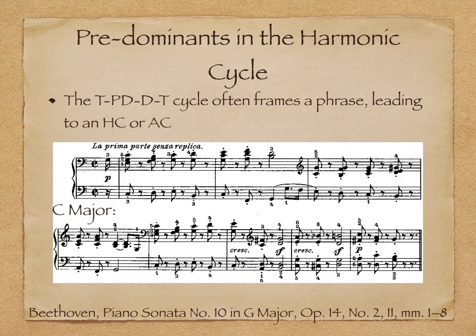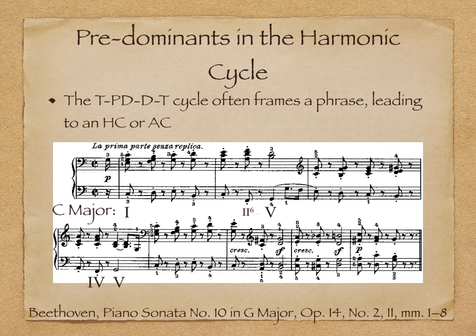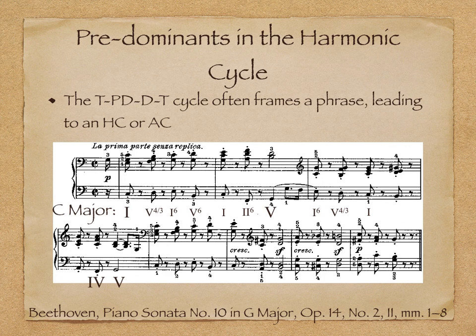The harmonic cycle often frames a phrase, leading to some type of cadence. Let's return to the Beethoven we heard earlier and look at some of the other chords in the phrase. Here are the main harmonies in the framework. Looking closer, you can see how a tonic expansion in the first few bars leads to a predominant on 4 in the fourth measure, where scale degree 4 is a neighbor tone to scale degree 5, or G in the bass. The contrary motion in the voices adds to the predominant intensification of the dominant. Here our phrase ends on a half cadence.